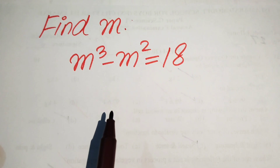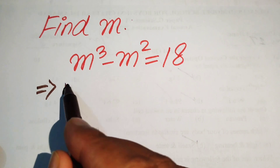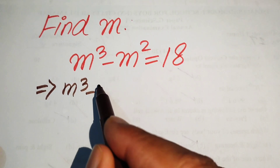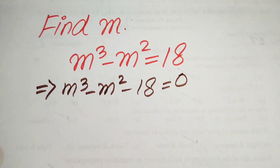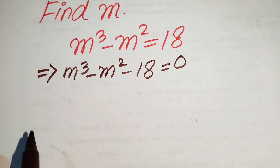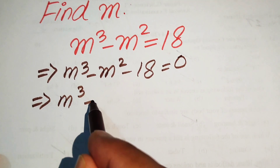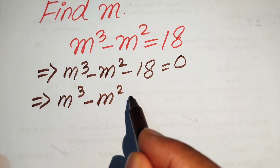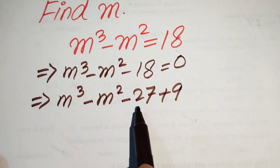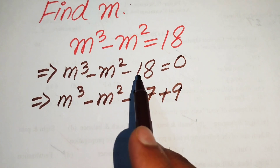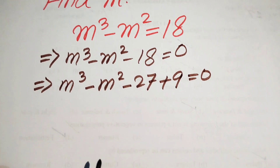The very first step is to move 18 to the left-hand side, written as m cubed minus m squared minus 18 equals 0. Now we break this minus 18 and write it in the form minus 27 plus 9, since minus 27 plus 9 equals minus 18, so the whole equation equals 0.